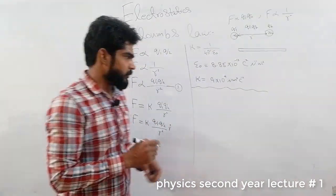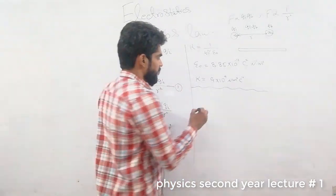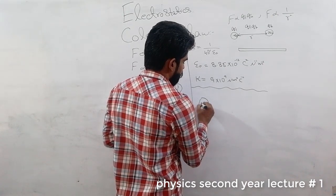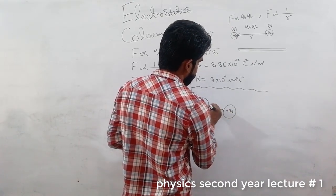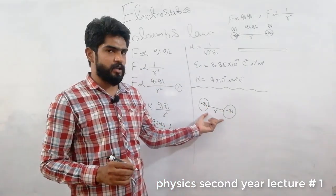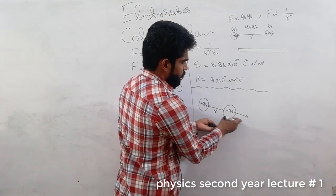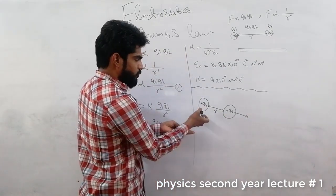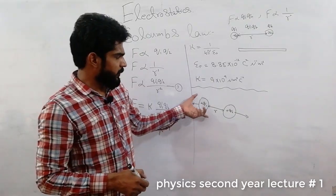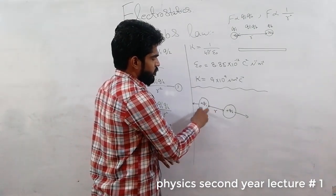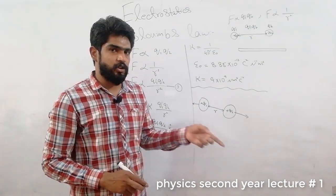Like charges repel each other, but unlike charges attract each other. For example, if we have positive q1 and positive q2 with distance r between them, the force between them is repulsion. The force q1 exerts on q2 is in one direction, but q2 exerts an equal force on q1 in the opposite direction.